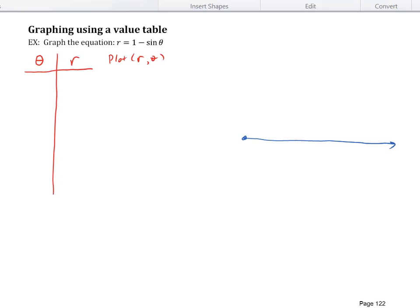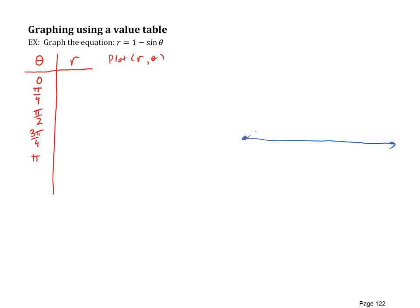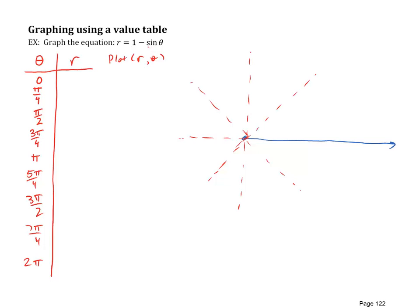Let's pick a range of thetas that make sense. Since sine is periodic and repeats every 2π, let's go from 0 to 2π, picking interesting points along the way: 0, π/4, π/2, 3π/4, π, 5π/4, 3π/2, 7π/4, and 2π. These are interesting because they let us see what happens to the radius as we trace out those angles.